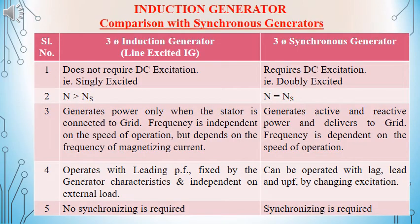We will now compare between the synchronous generator and the induction generator. In the case of induction generator, we do not have any DC excitation required and it is a singly excited machine. But for synchronous generator, there should be a DC excitation and it is called a doubly excited machine. For induction generator, the speed of operation will always be greater than the synchronous speed, but in the case of synchronous generator, the speed of operation should be the synchronous speed itself.